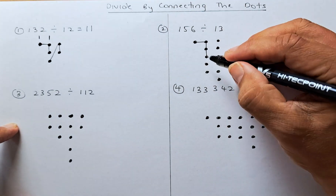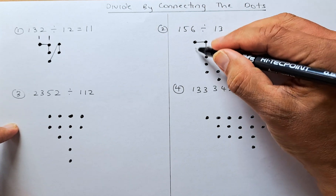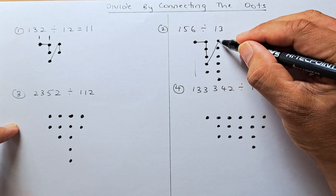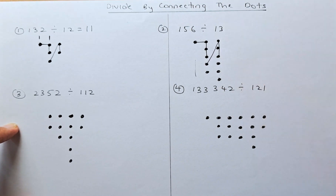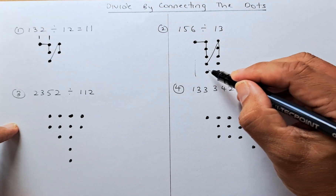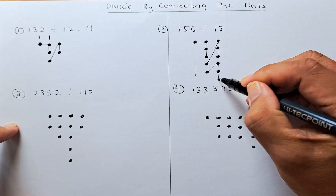Next, you're going to join one dot in the next column — since there's nothing here — so one dot to three dots. And the last one, again you start from here: one dot to three dots.